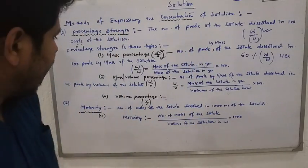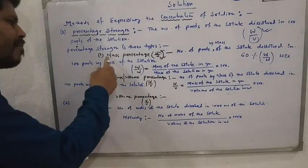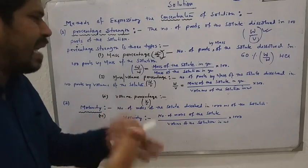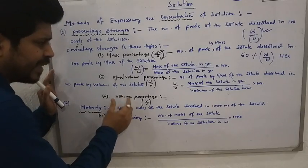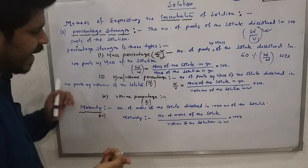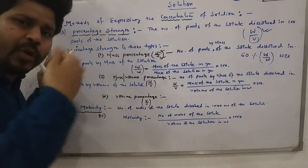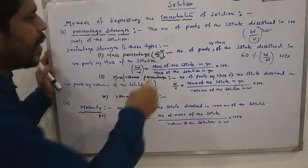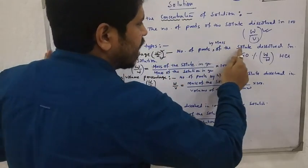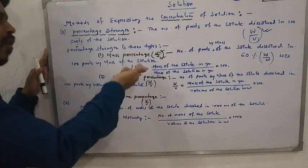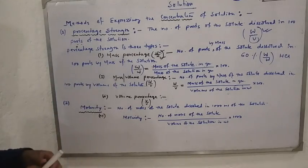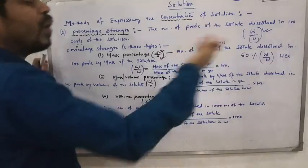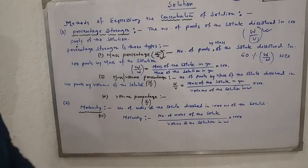Volume percentage is similar to the previous two. In V/V, both solute and solution are expressed in terms of volume. The definition is: the number of parts by volume of the solute dissolved in 100 parts by volume of the solution. The working formula is: volume of the solute in mL divided by volume of the solution in mL, multiplied by 100.